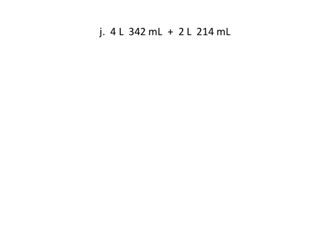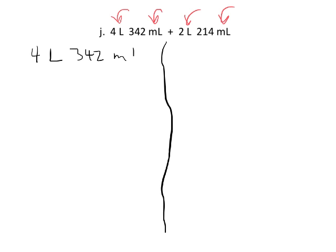Now this one, this one's kind of fun because we have a couple of different units. We have liters and milliliters. So there's a couple of ways we can solve this and I think I'll have time to do both. So the first one is leave the units alone. So we've got 4 liters plus 342 milliliters, and then we're going to add 2 liters plus 214 milliliters, and let's add.